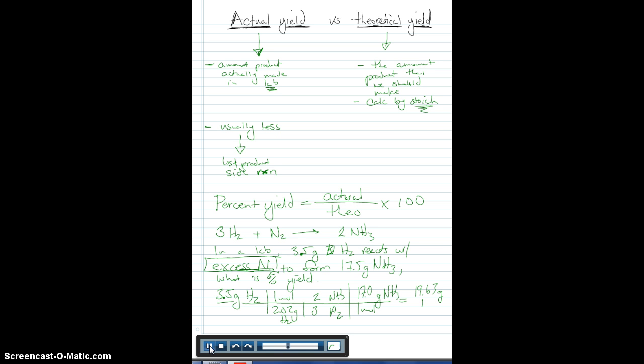Now, what that is, because I did the stoichiometry, that's going to be my theoretical yield. Now, going over to the next page, we'll stay on this page real quickly. Our actual yield is given to us in the problem. They said it formed 17.5 grams. So this is my actual. So I have an actual 17.5 less than theoretical 19.63.